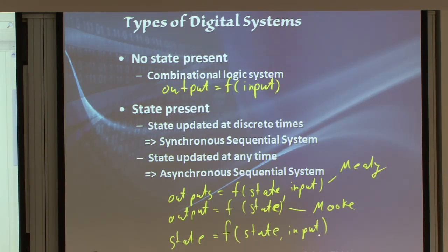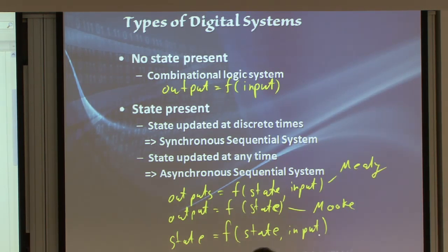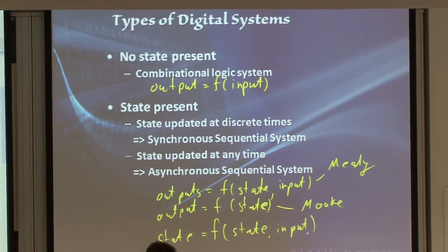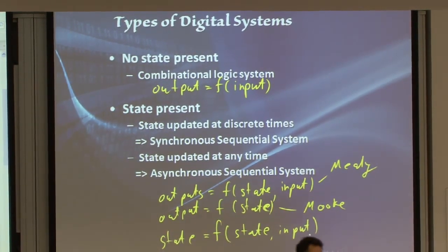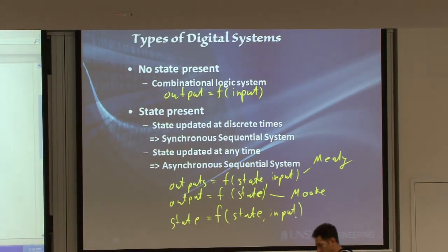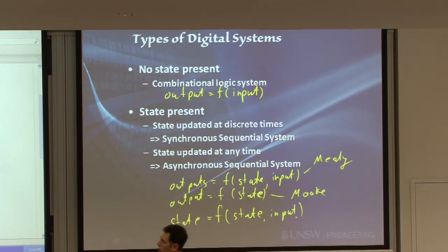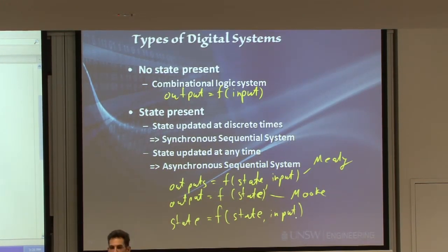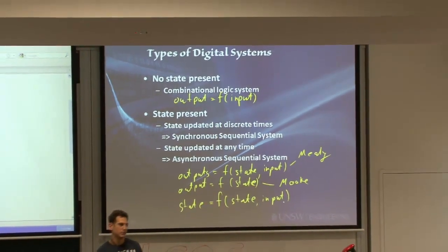Even then, you can divide them into two subgroups: synchronous sequential systems and asynchronous sequential systems. The synchronous ones only get updated — the current state and current output — at discrete times of some signal, usually a clocking signal. The asynchronous ones change their outputs as soon as the current inputs change, regardless of whatever clocking signal there is.